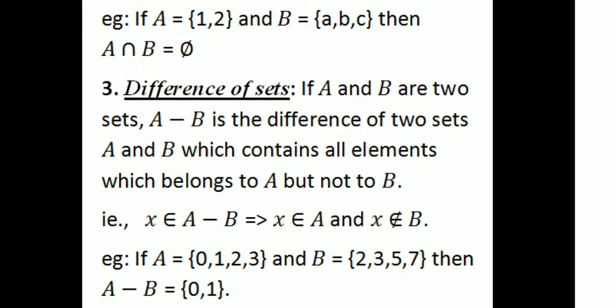The next operation is difference of sets. If A and B are two sets, then A minus B is the difference of two sets A and B, which contains all elements which belong to A but not to B. That is, X belongs to A minus B means X belongs to A and X does not belong to B. For example, if set A equals {0, 1, 2, 3} and set B equals {2, 3, 5, 7}.